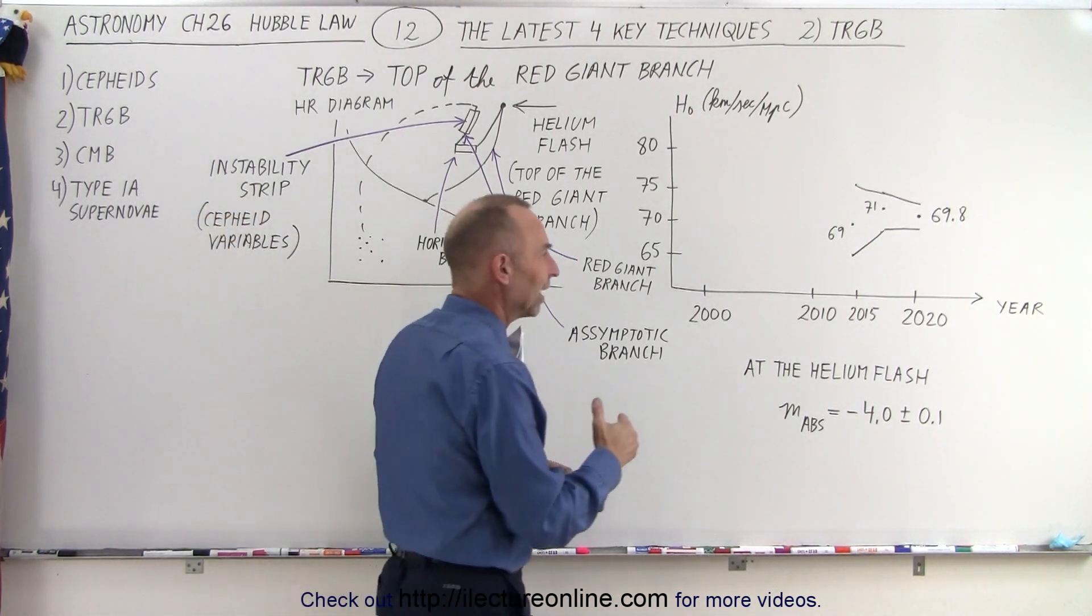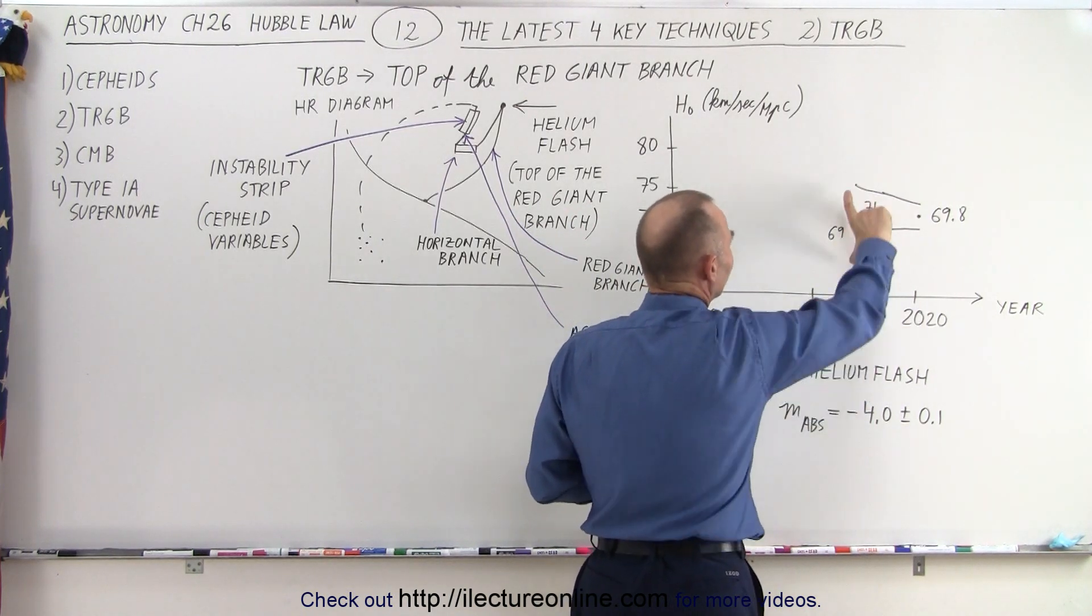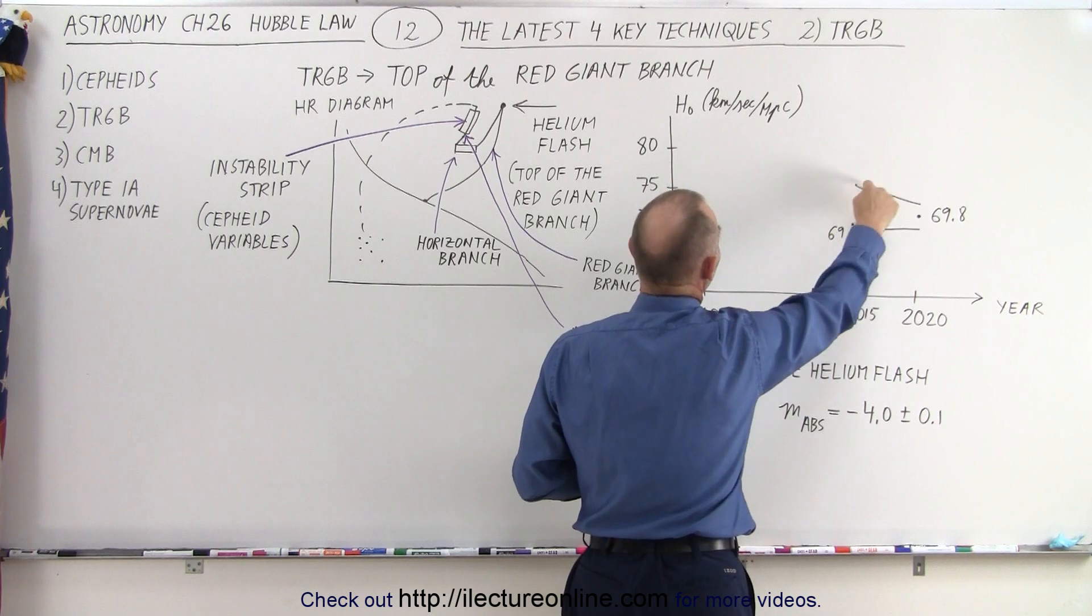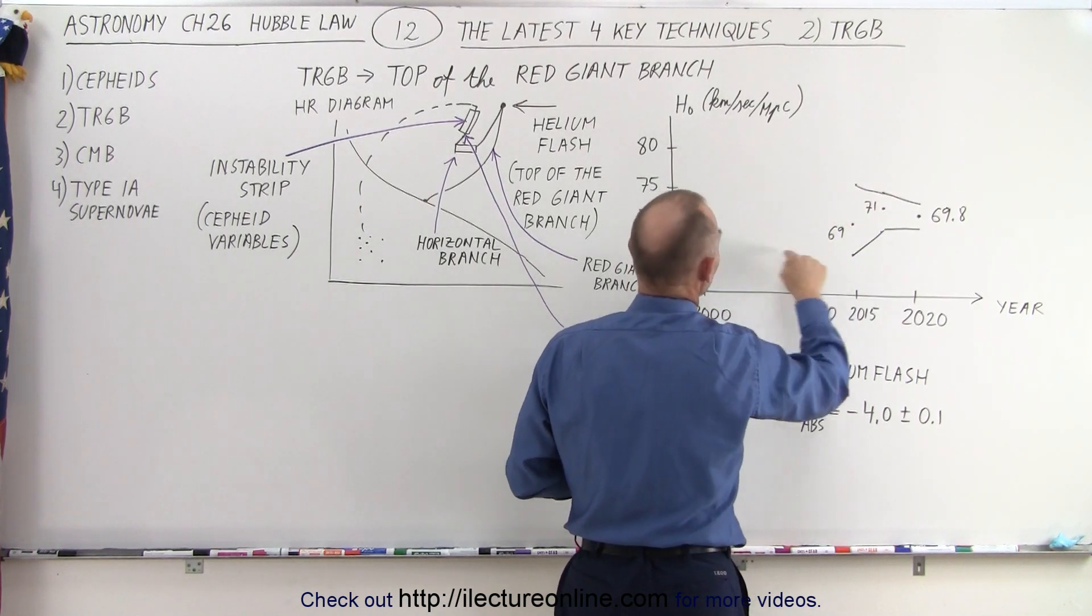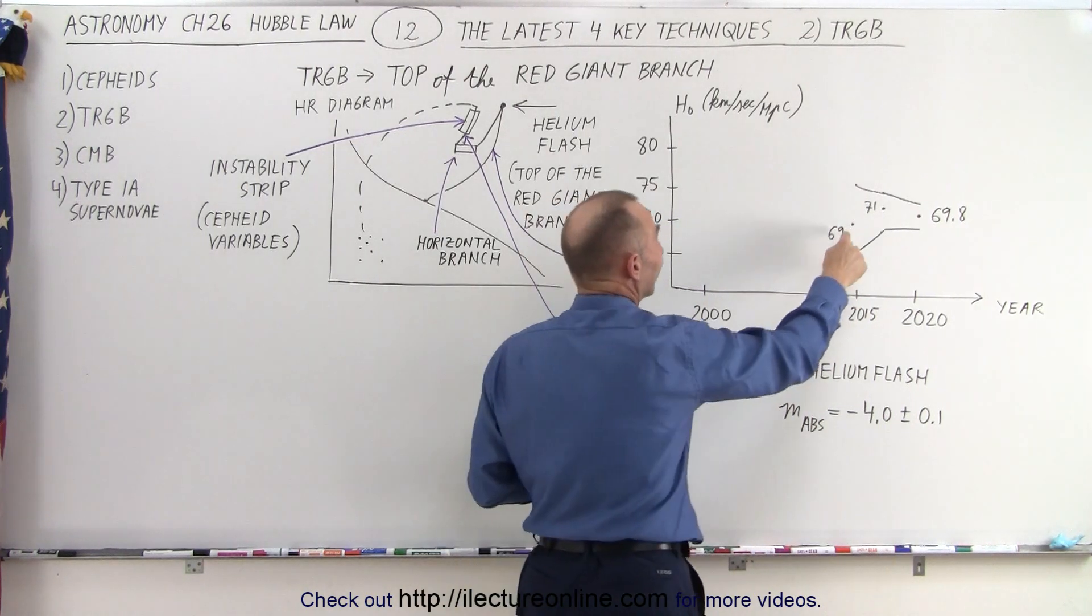Notice that this is a technique that didn't start until about 2012, 2013. By 2014, the range was about 75 on the high end and about 65 or so on the low end, with an estimated value of about 69.